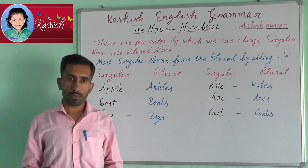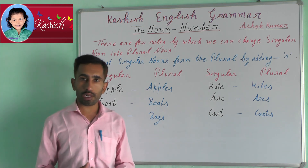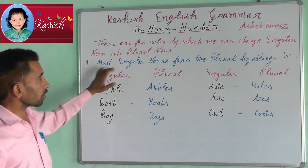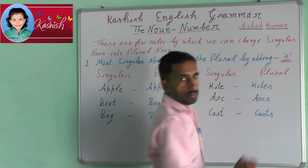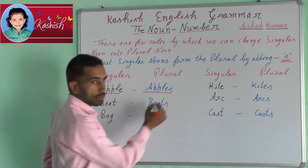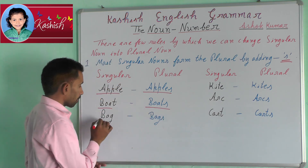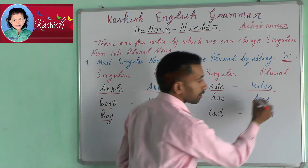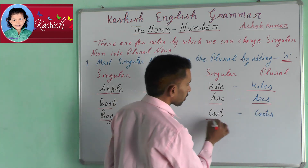There are few rules by which we can change singular nouns into plural nouns. First rule: most singular nouns form the plural by adding S. For example: apple → apples, boat → boats, bag → bags, kite → kites, cart → carts.